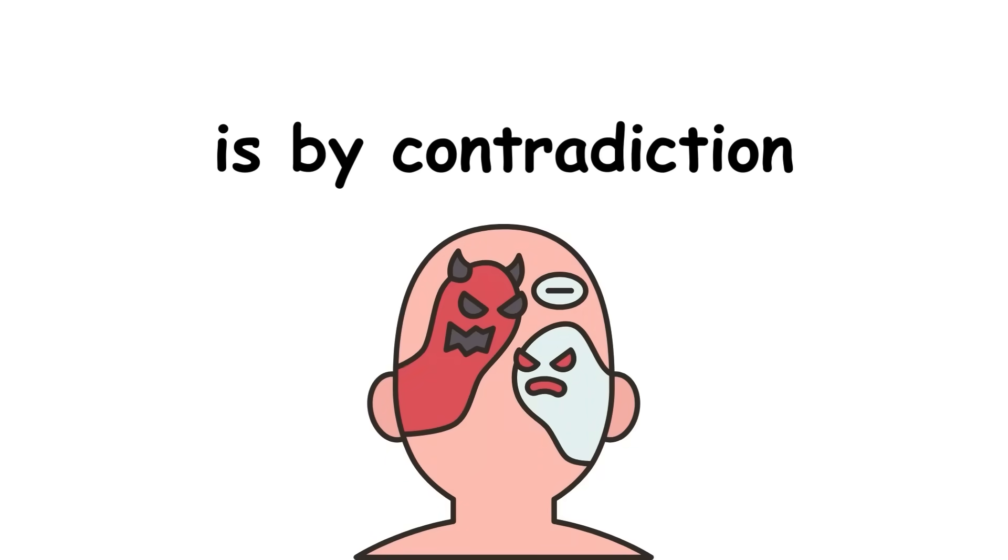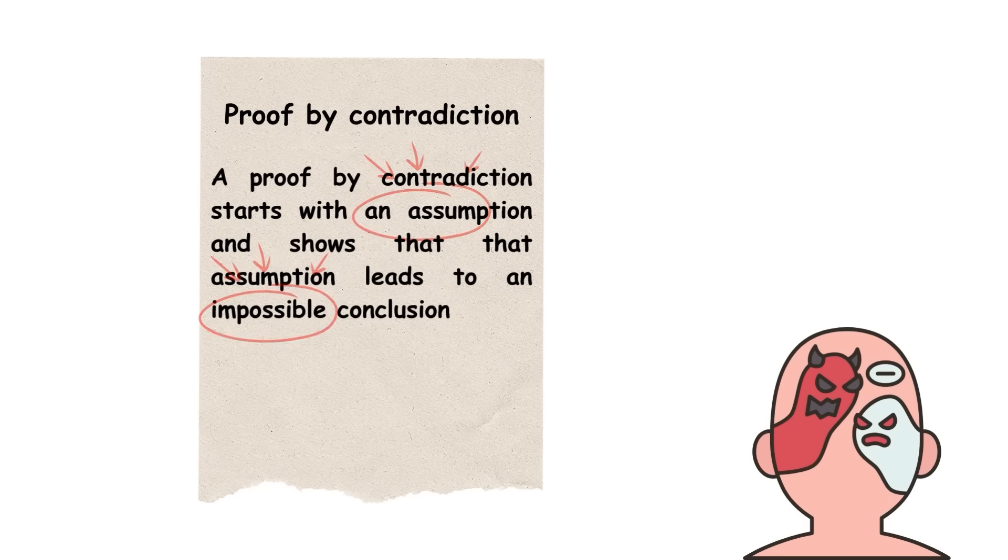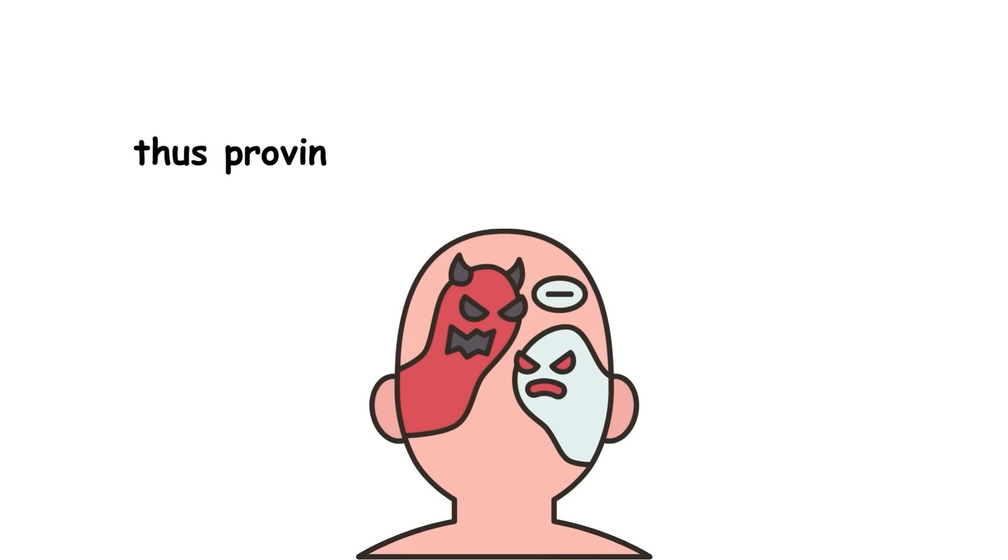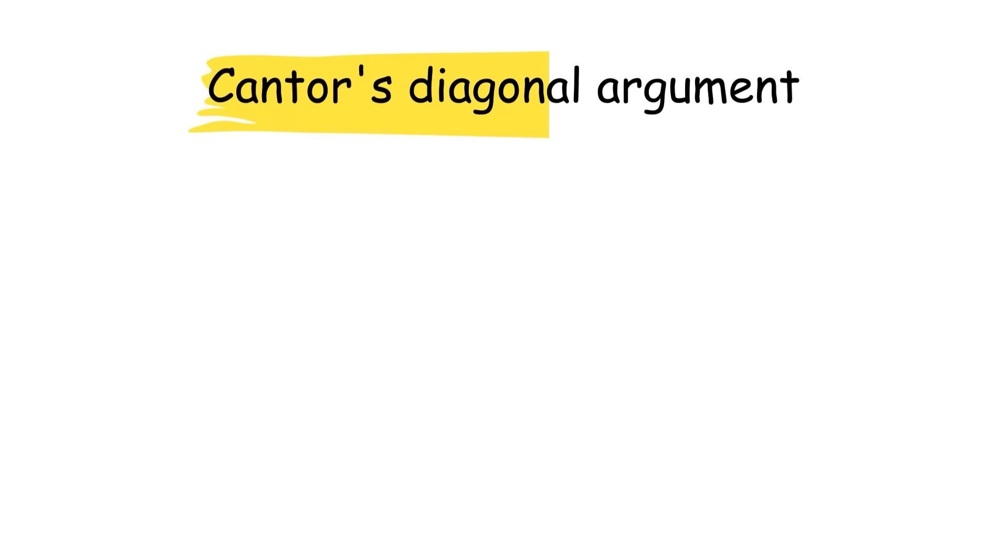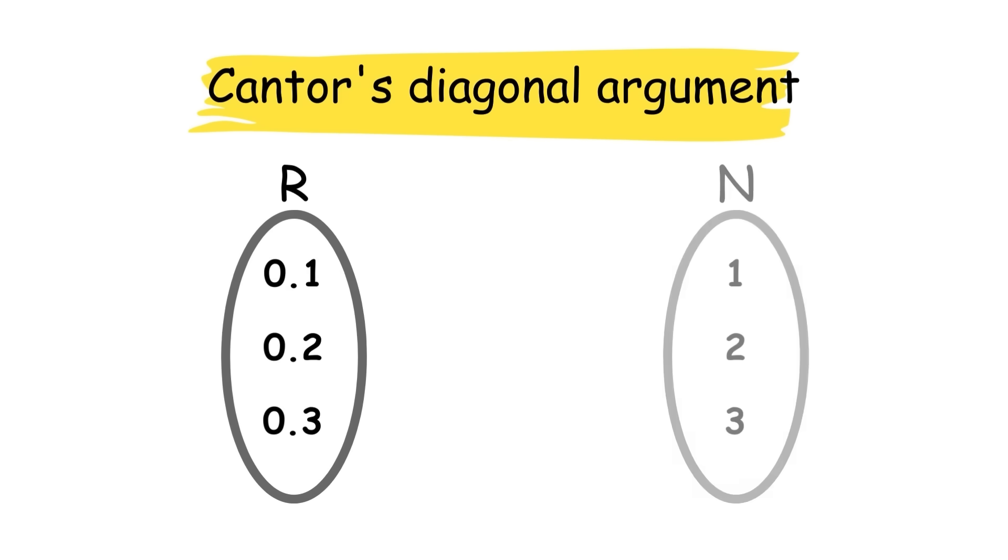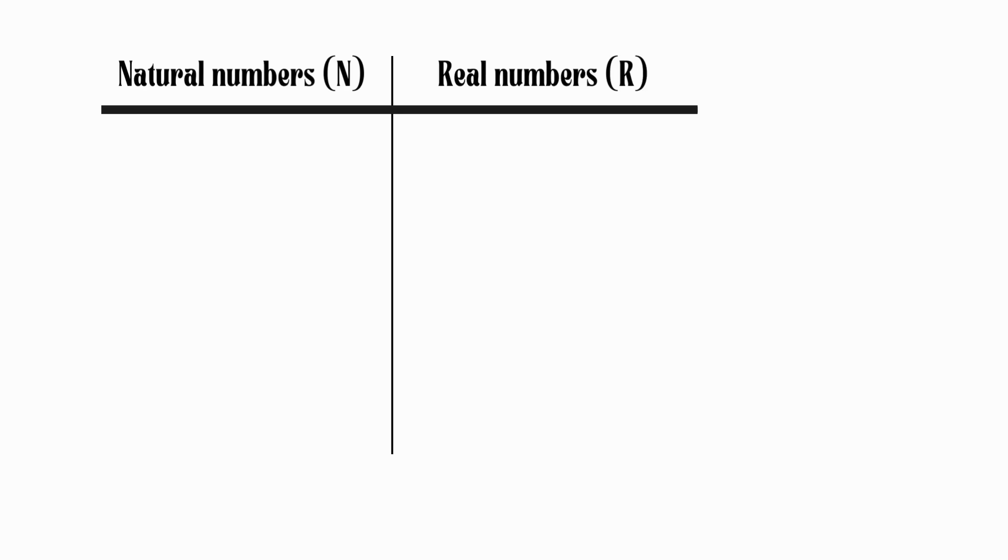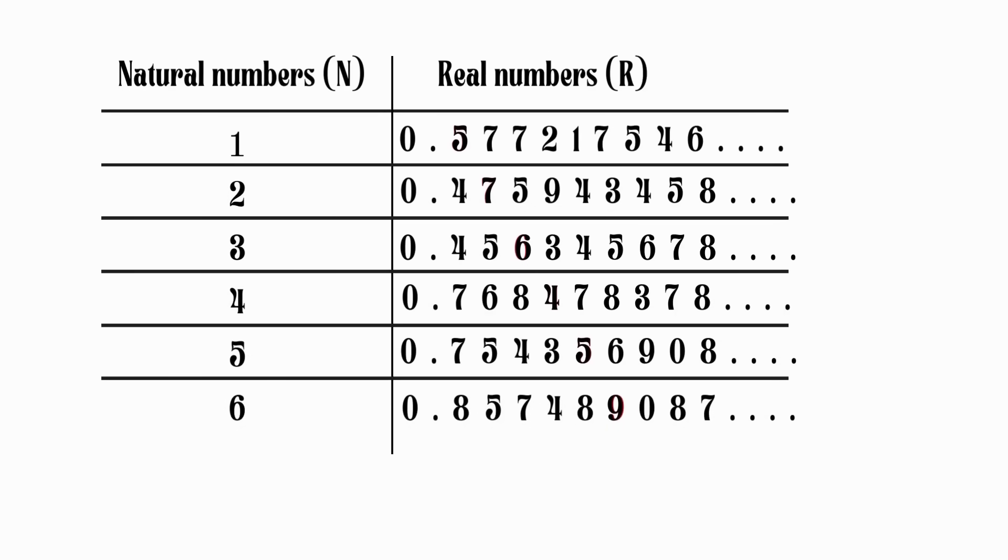The proof is by contradiction. A proof by contradiction starts with an assumption and shows that the assumption leads to an impossible conclusion, thus proving that the assumption is wrong. In Cantor's Diagonal Argument, we begin by assuming that the set of real numbers between 0 and 1 and the set of natural numbers have the same cardinality. If so, that means each real number can be paired with a natural number 1 to 1 with no numbers left over, so let's do that and put the pairs in a list.